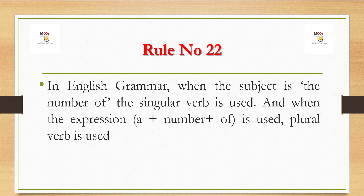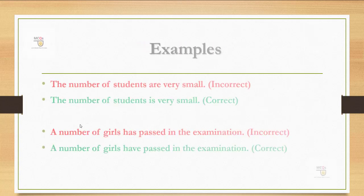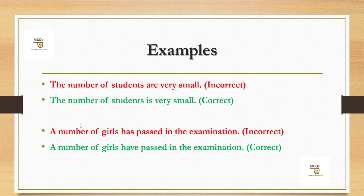اس کو مزید سمجھنے کے لیے ہمیں example پہ جانا پڑے گا۔ اب دیکھیں example بالکل simple ہیں۔ 'The number of students are very small' - ہم نے کیا پڑھا، 'the number of' جب استعمال ہوگا تو verb کیا استعمال ہوگا؟ Singular. تو یہاں 'are' ہے اس لیے incorrect ہوگیا۔ 'The number of students is very small' - تو یہ correct کیوں ہوگیا؟ کیونکہ یہاں singular verb use ہوگا۔